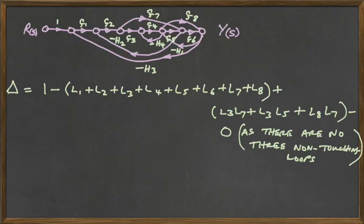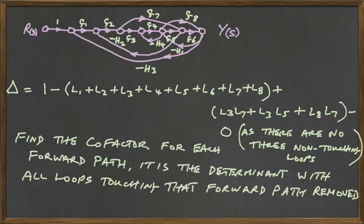So let us continue. What's the next step? The next step now is to find the co-factor and this is perhaps the most difficult one of all but it needn't be so. The co-factor, you have a co-factor for each forward path and it's just the determinant with all the loops that touch that particular forward path removed.